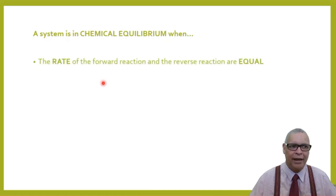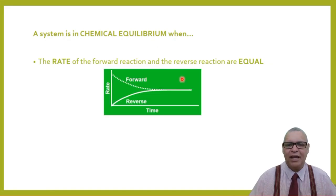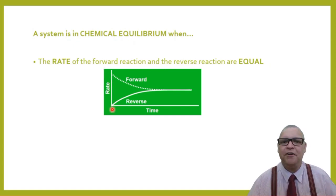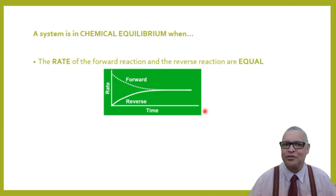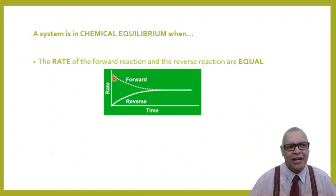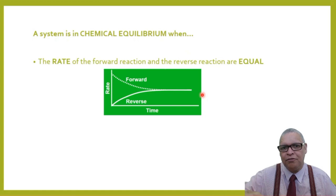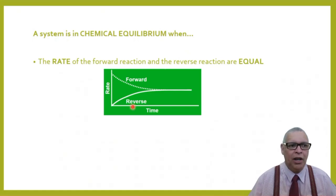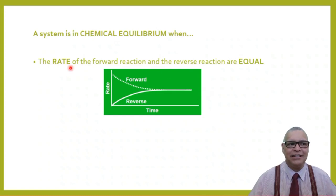A system is in chemical equilibrium when the rate of the forward reaction and the reverse reaction are equal. On the graph, the rate is on the y-axis and time on the x-axis. The dotted line for the forward reaction starts high then decreases to a plateau, while the reverse reaction starts from almost nothing and increases until both rates meet and become equal.